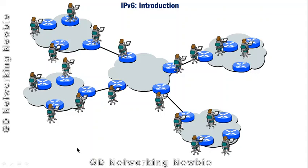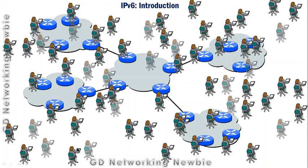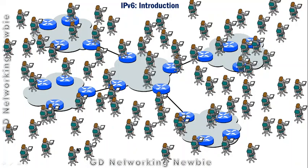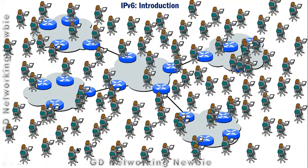With IPv4 we can assign IP addresses and it works fine, but there is a limit. As the number of users increases — looking at the potential of the internet — the number of users and electronic gadgets is increasing. At some point we run out of addresses and we don't have more IPv4 addresses to assign to new users.